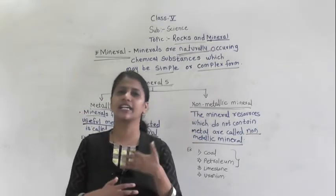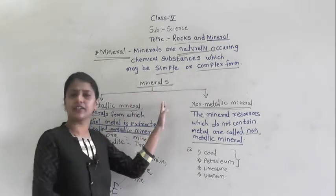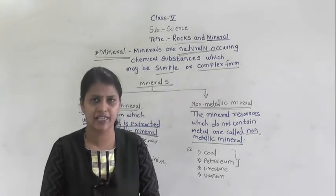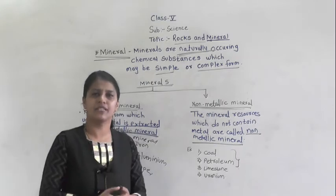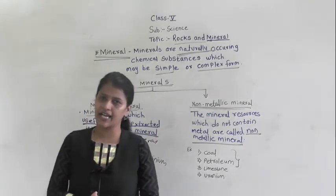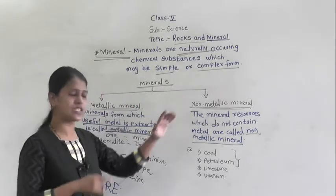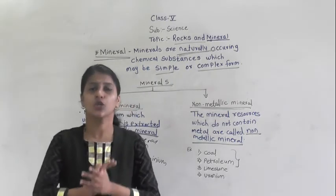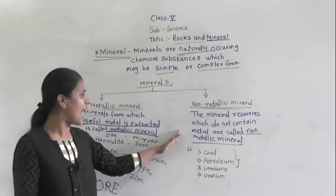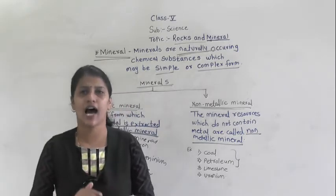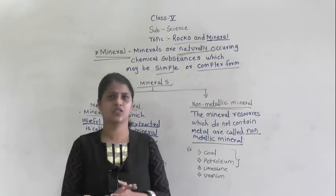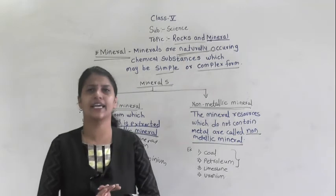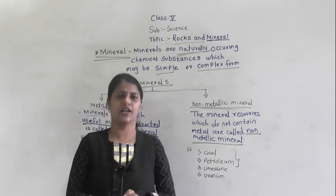The uses of these minerals we will learn in the next video. Now, the next type of mineral is non-metallic mineral. The mineral resources which do not contain metal are called non-metallic minerals. For example, coal, petroleum, limestone, and uranium — these are examples of non-metallic minerals.